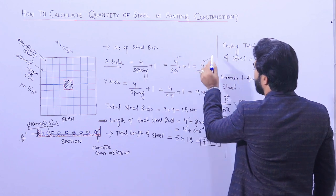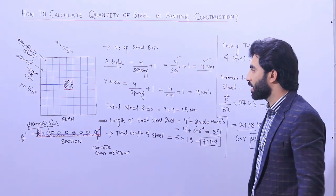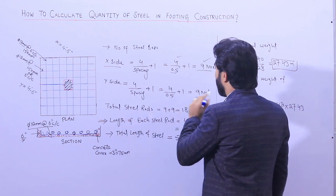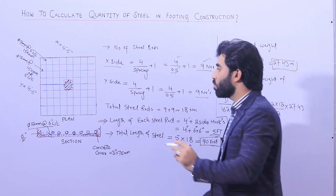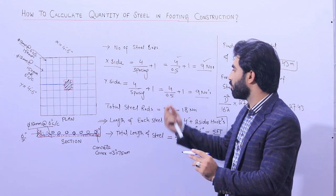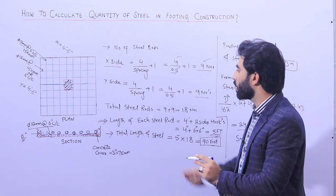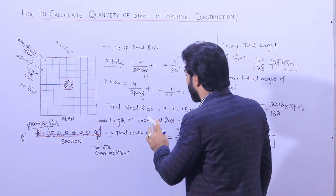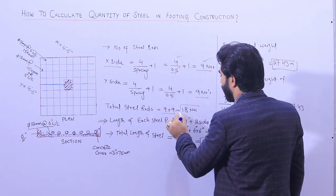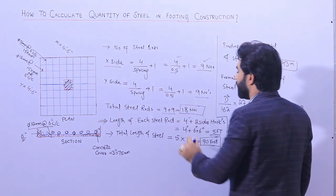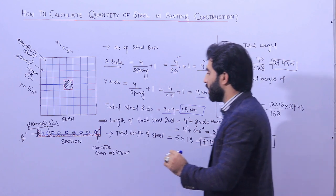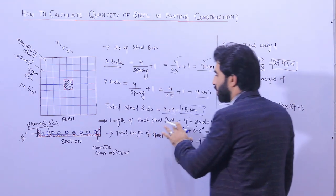Similarly, in the Y direction we also get 9 numbers of steel rods, because the length is the same for this square footing. Therefore the total number of steel rods required is 9 + 9 = 18 numbers for both directions combined.